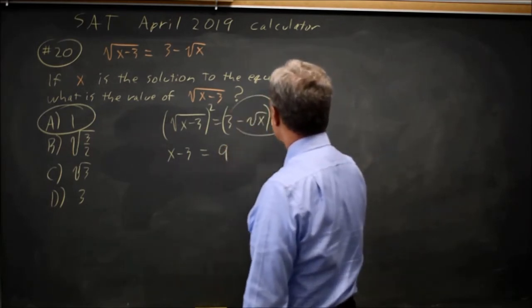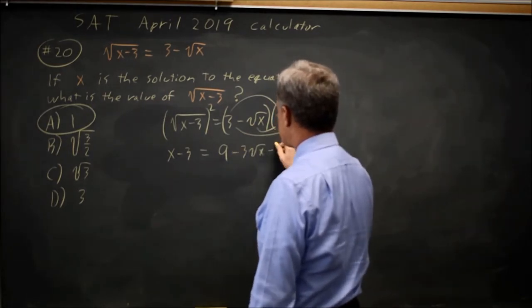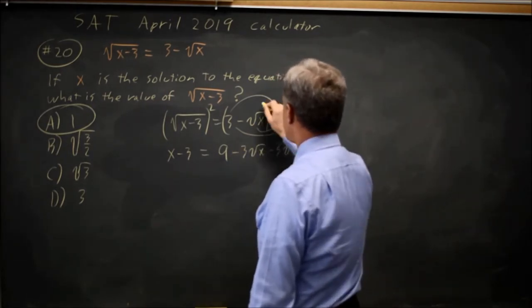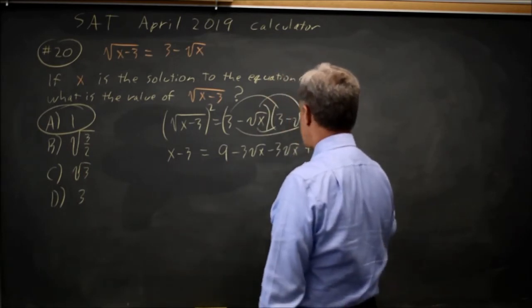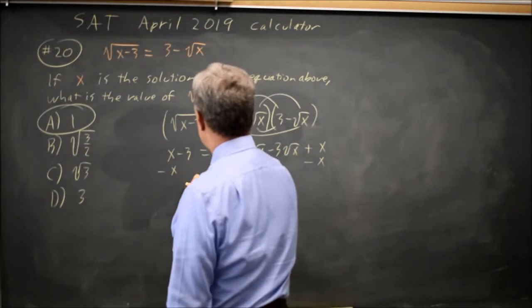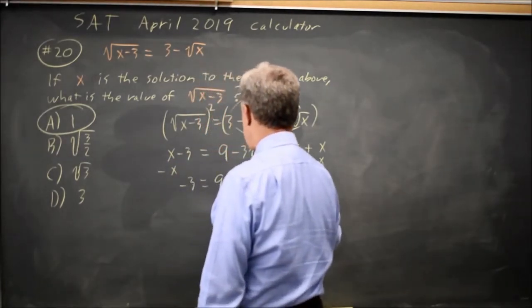3 times 3 is 9, 3 times negative root x is negative 3 root x, negative root x times 3 is minus another 3 root x, and negative root x times negative root x is positive x. If I subtract x from both sides, I get negative 3 equals 9 minus 6 root x.